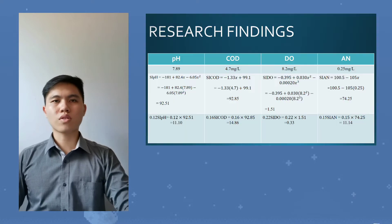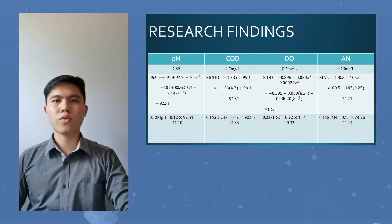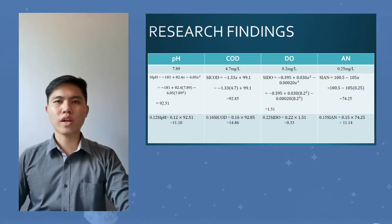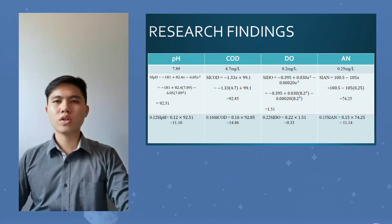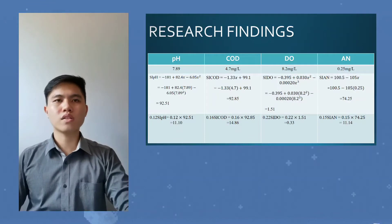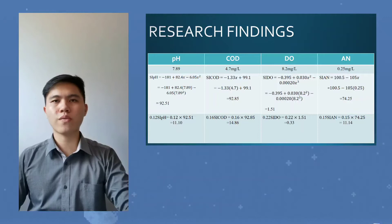Next are our research findings. For pH, we obtained a value of 7.89; COD with 4.7 mg/L; DO with 8.2 mg/L; and ammonia with 0.25 mg/L.